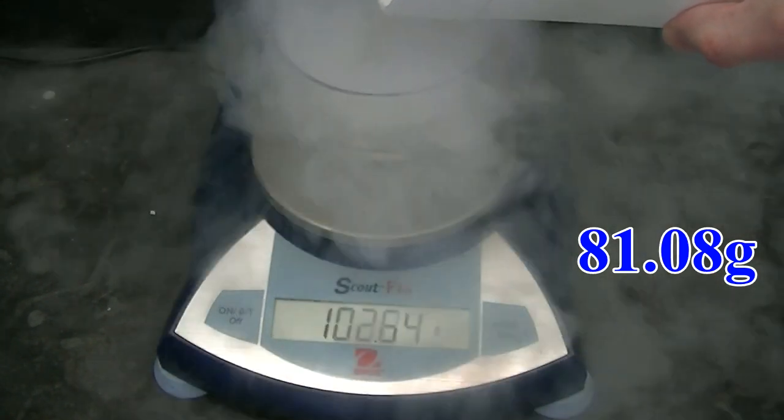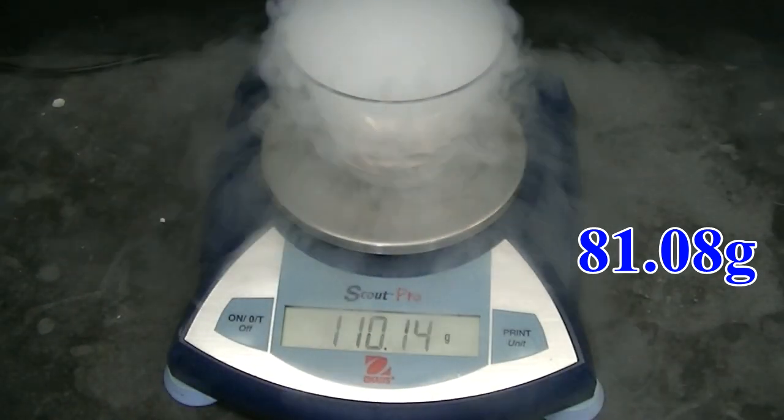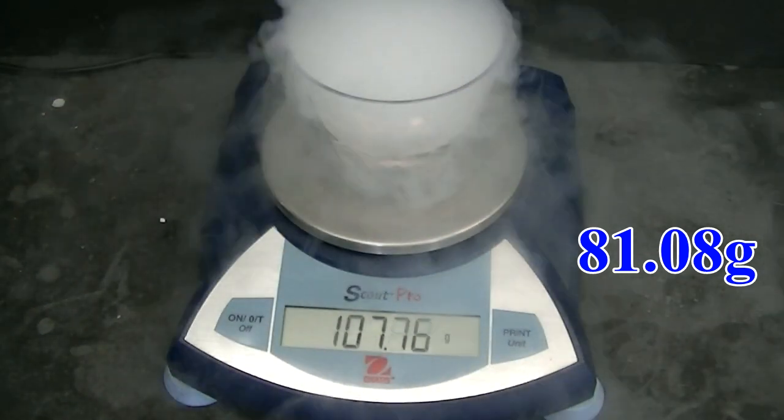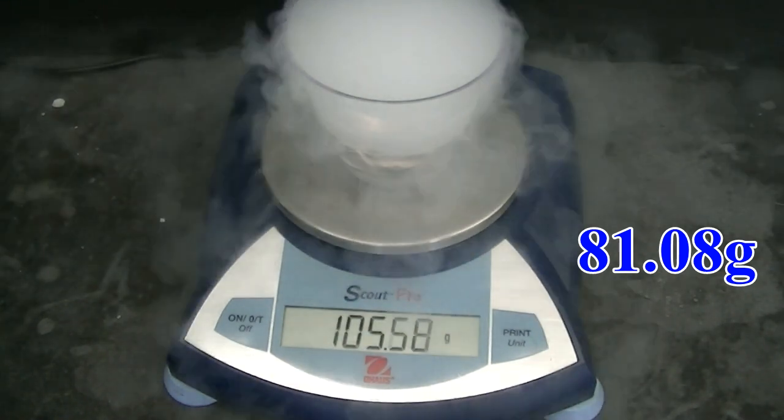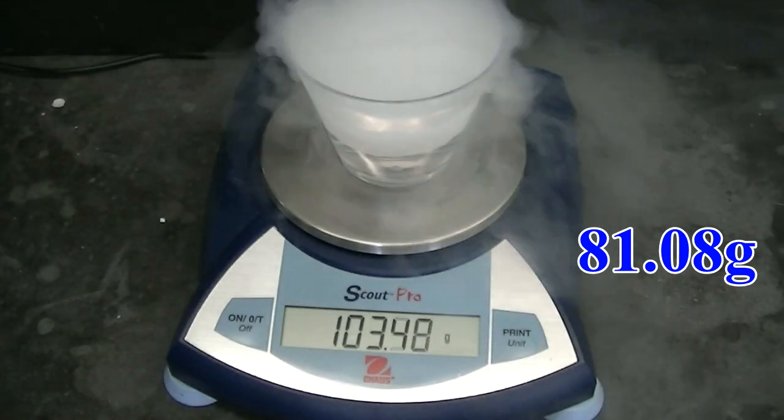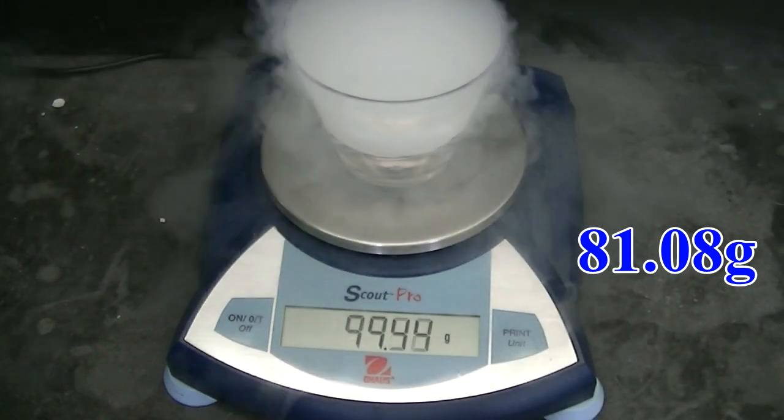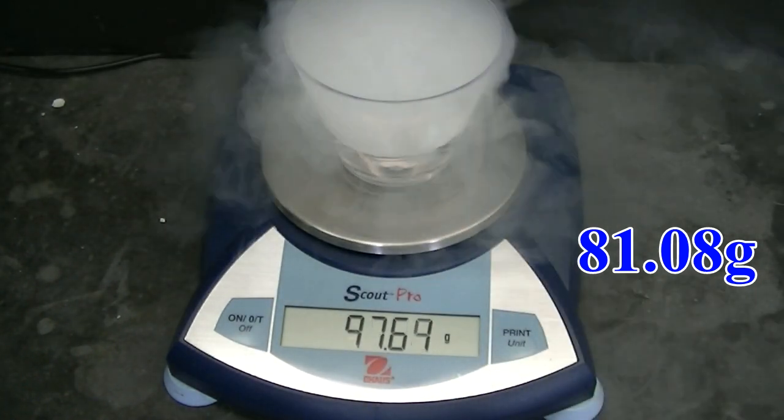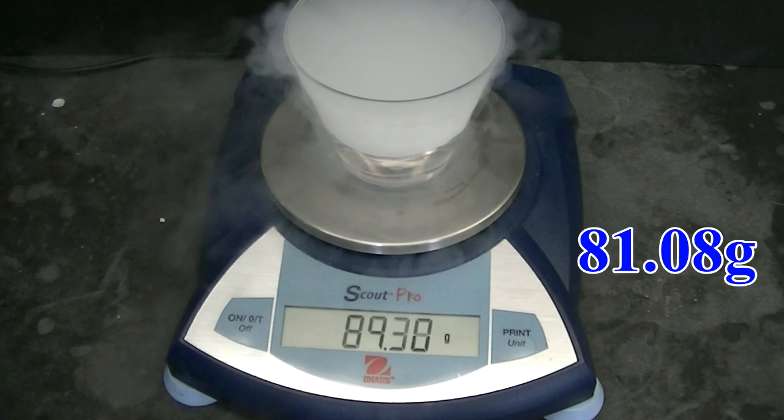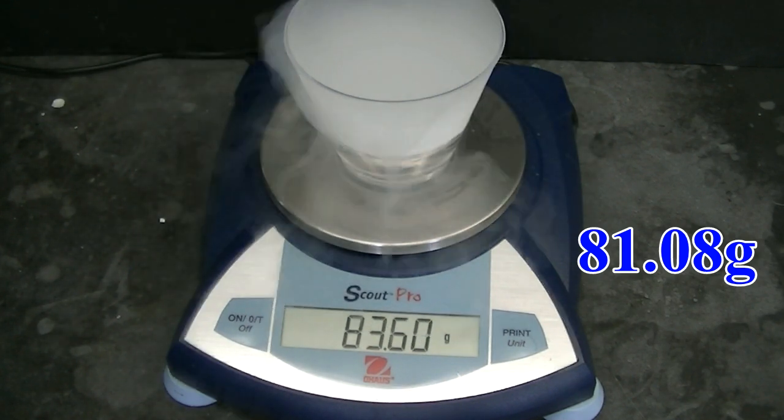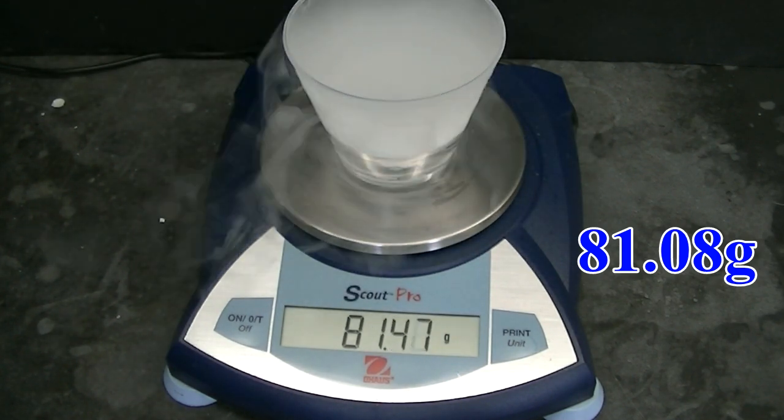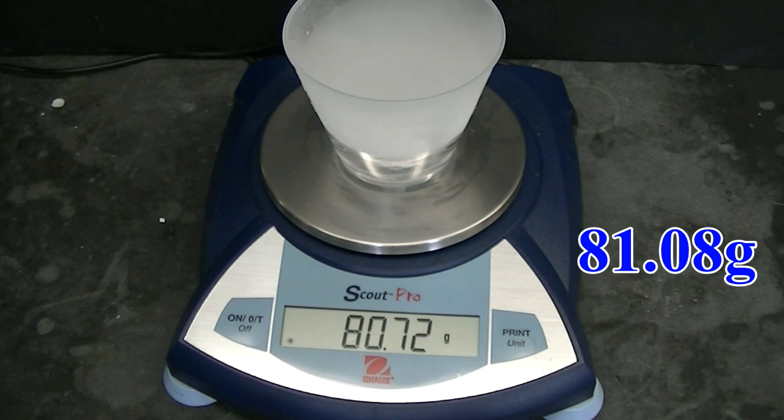We see that the mass goes up due to the addition of liquid nitrogen to the cup. We clearly see cloud formation, and we notice that the cloud escapes the cup as it forms. Now if the water in the cloud is coming from the water in the cup, then we would expect the mass of the assembly to drop to less than 81.08 grams, and that's exactly what we observe.